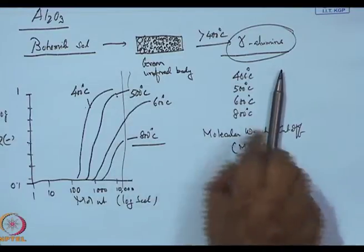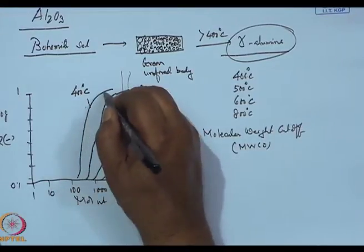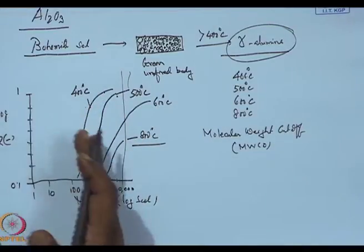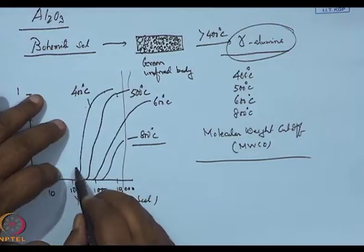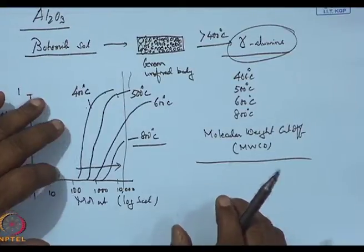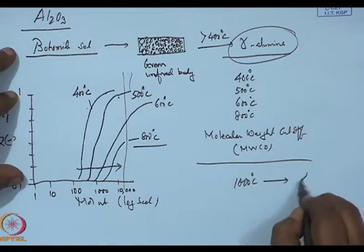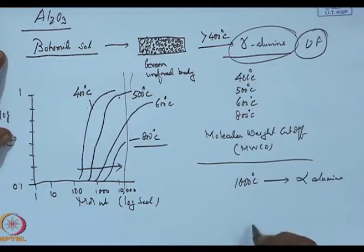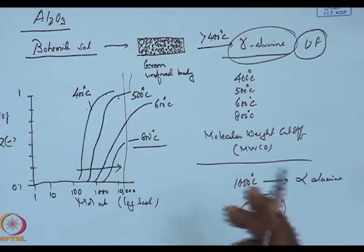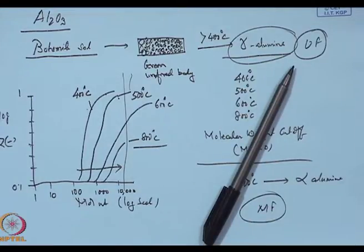This means the pore size increases. Because at 400 degree centigrade, I can block low molecular weight fractions. As I keep on firing to higher temperatures, the MWCO cutoff increases to higher molecular weight, indicating that the pore size is increasing. This happens because the grain size increases. If this sintering is done at 1000 degree centigrade, it changes over to alpha alumina. And the ultra filter, which we have, changes over to a microfilter.